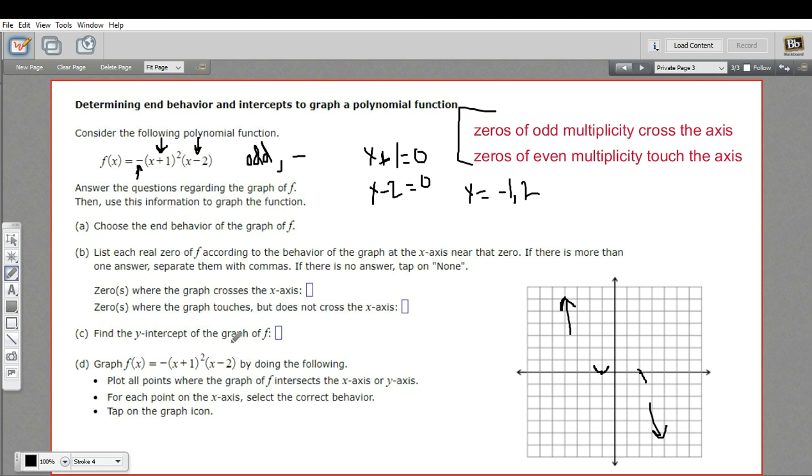Let's find the y-intercept. This is easy. We just put in 0 for x to find the y-intercept. If I put in 0 for x, I get a negative 0 plus 1 squared times 0 minus 2. So this is a negative 1 squared, which is just 1, times a negative 2. All of that comes out to a positive 2. So it crosses the y-axis at positive 2.